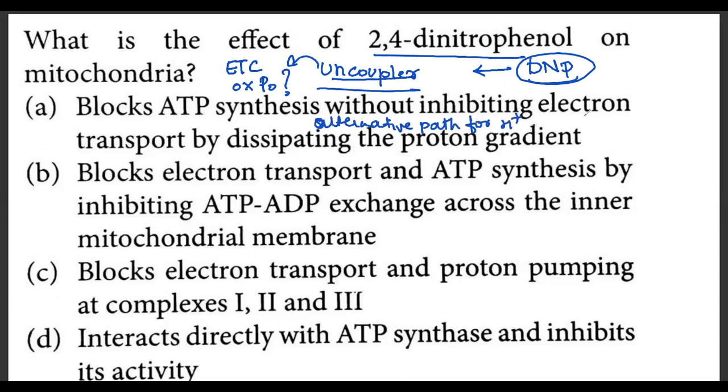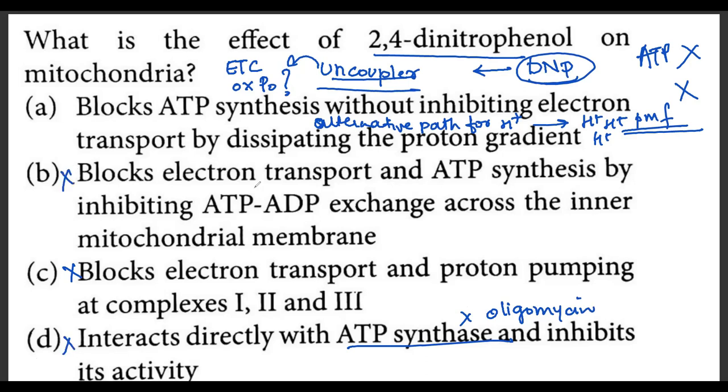In this way, the proton motive force that is generated, the proton gradient that is established, is now dissipated. H pluses are simply passing through with no synthesis of ATP. So it blocks the synthesis of ATP, but does it block ETC? No. ETC continues as it is because H pluses are still passing through the membrane. Therefore, ETC will just go on. It doesn't react with ATP synthase, that is done by oligomycin. So this option is also incorrect.